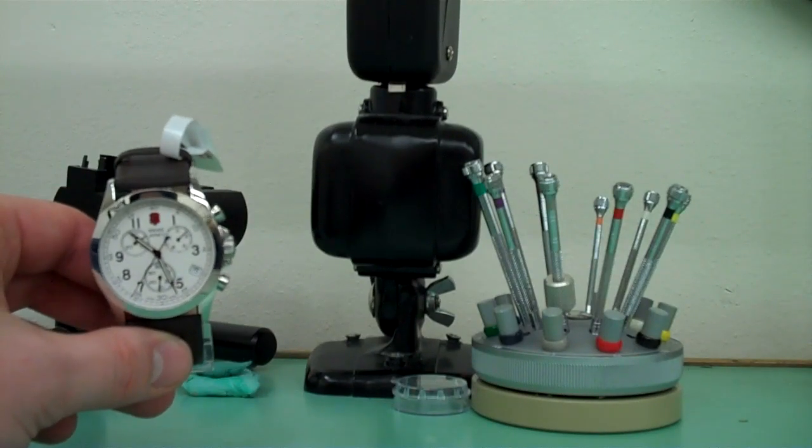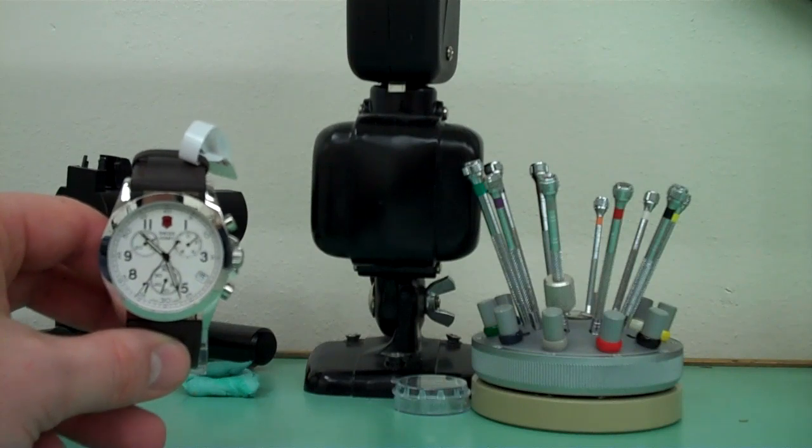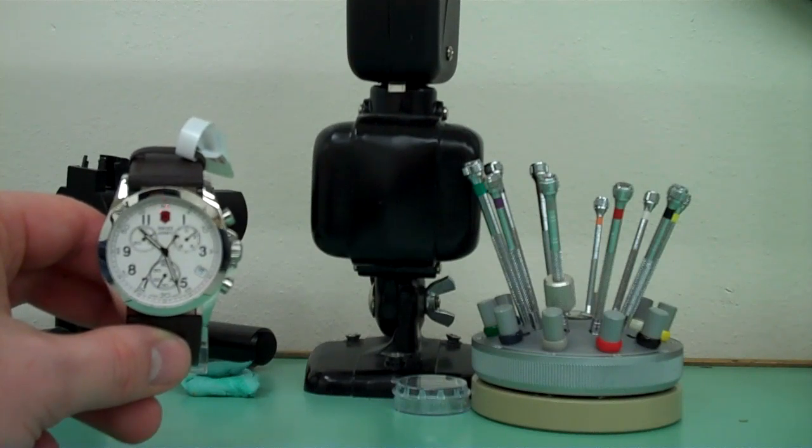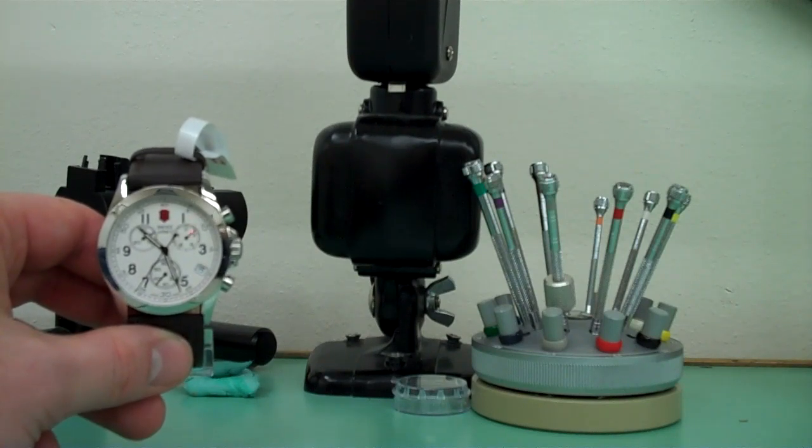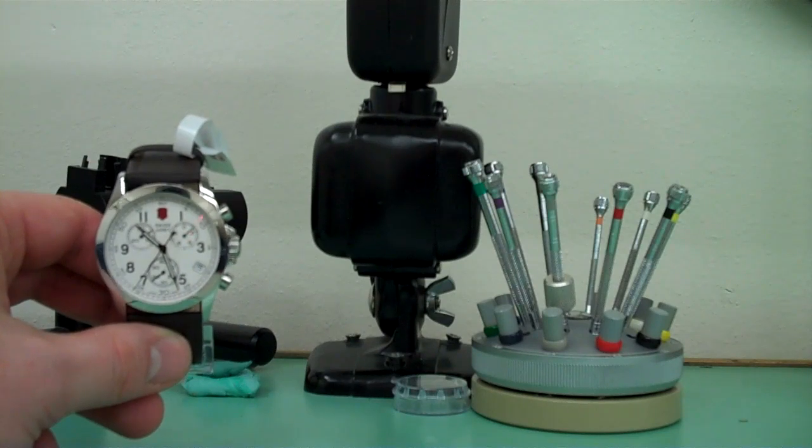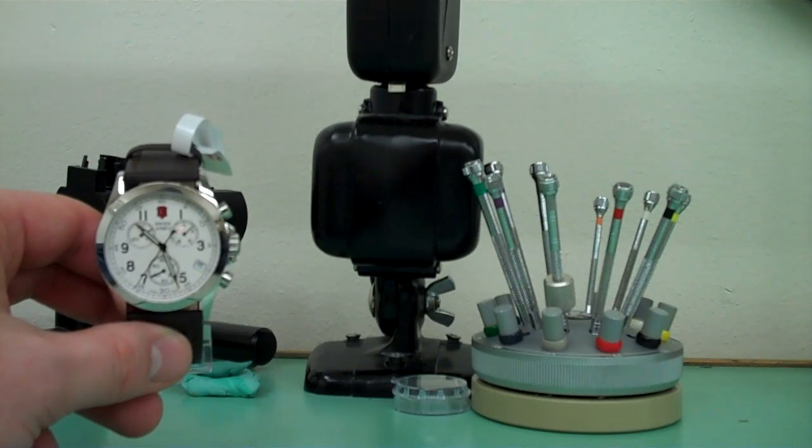In this video, I'd like to demonstrate how to recalibrate the hands on a modern quartz Swiss chronograph. The movement in this is the ETA G10211. It's very commonly used in chronographs under $1,000.